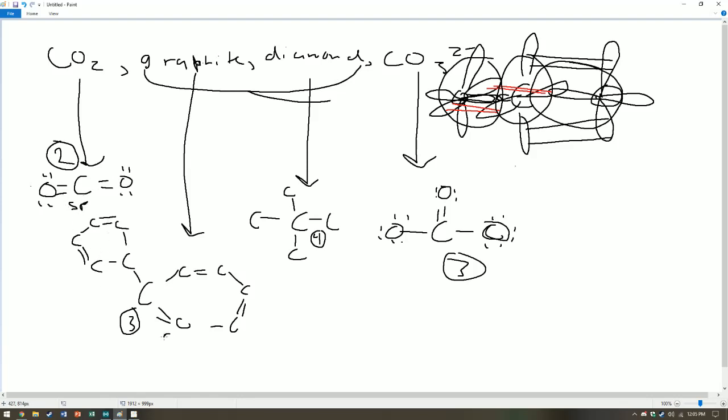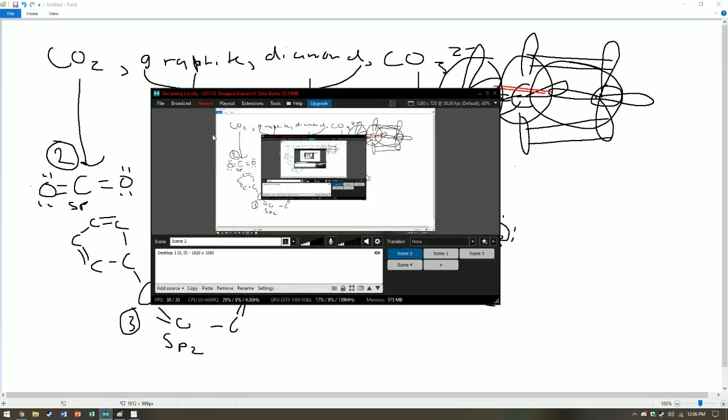And then here we have sp2, sp3, and then sp2. And if I look at the mark scheme, carbon dioxide is sp, diamond is sp3, graphite is sp2, and carbonate ion is sp2, so we are correct. Beautiful, and that should do it. Thank you very much for watching.